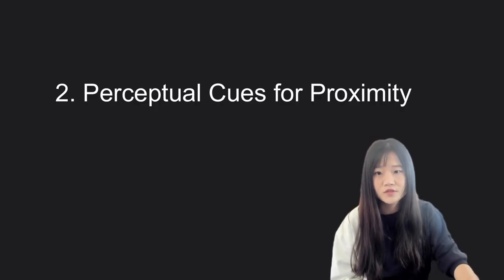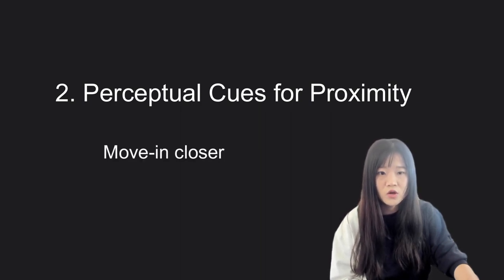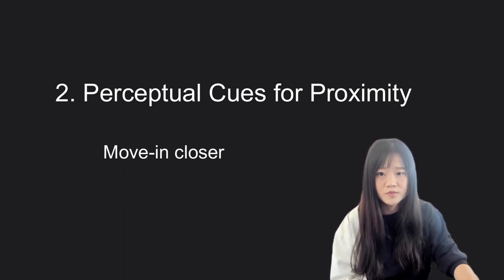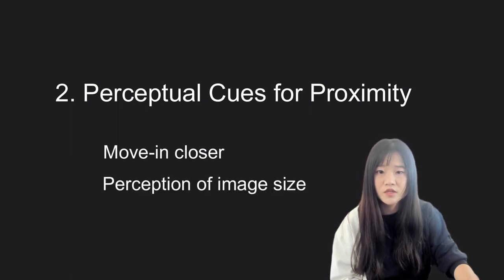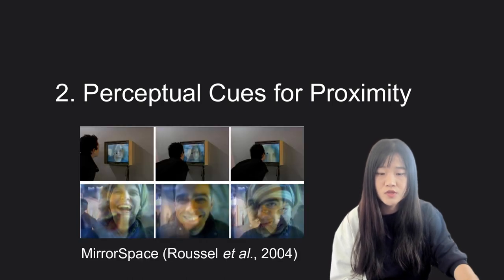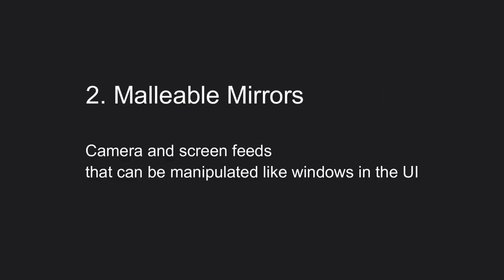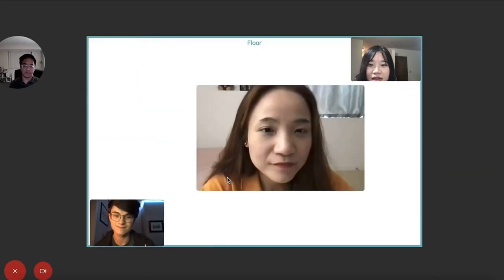The second notion is perceptual cues for proximity. This can be understood as moving closer to show intention to engage with others — the interpersonal distance. In particular, the perception of proximity distance can include image size. For example, mirror space shows how people lean towards the interface to show intimacy. Hence, we designed malleable mirrors, which simultaneously transform the position and scale of the video feed when the user is on the floor.